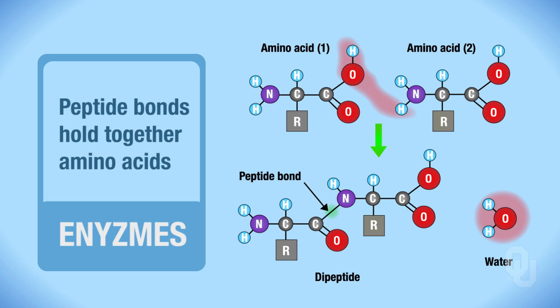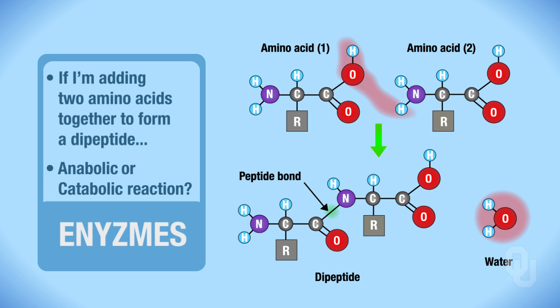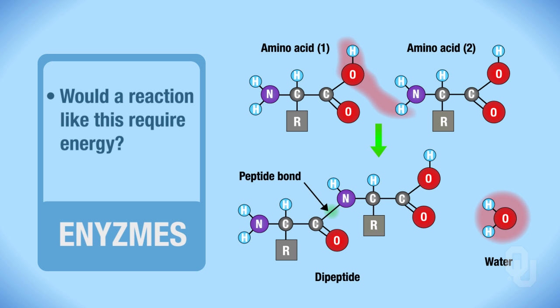So here's a question for you. If I'm adding two amino acids together to form a dipeptide, would this be an example of an anabolic or a catabolic reaction? This would be an example of an anabolic reaction. We're adding. Think anabolic starts with an A. We're adding two things together to make something much larger, an anabolic reaction. So would a reaction like this require energy? Does it require energy to build a macromolecule? The answer to that is yes.